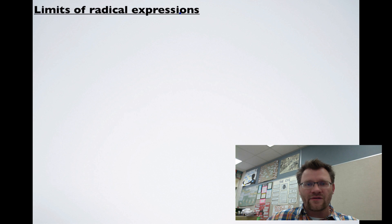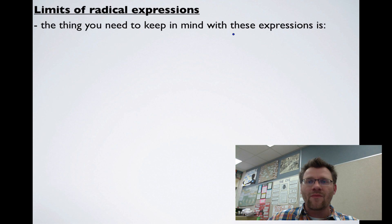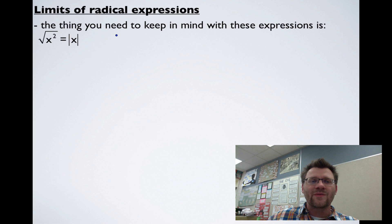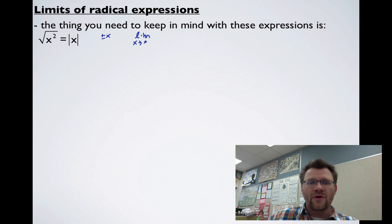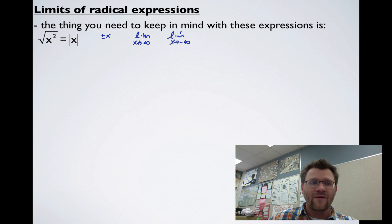Next we look at limits of radical expressions. The key thing to remember is that the square root of x squared is actually the absolute value of x, because the square root of x squared is either positive or negative x. We can take the limit as x approaches positive infinity or as x approaches negative infinity. If x approaches negative infinity, we take the negative value of x; if x approaches positive infinity, we take the positive value.